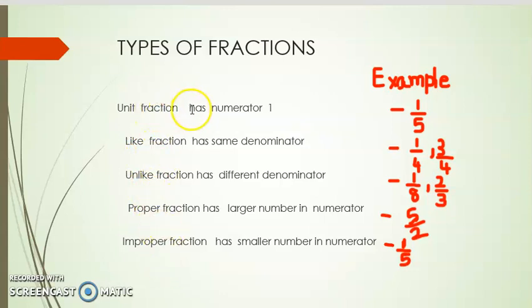Unit Fraction has numerator 1. Example: 1 by 5. In this fraction the numerator has 1, so it is called the unit fraction.